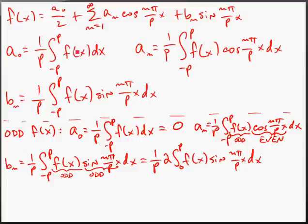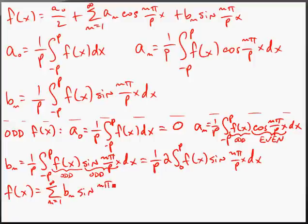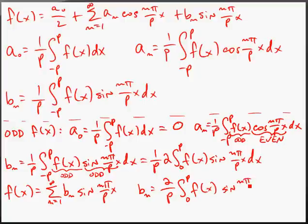You don't have to memorize these new forms — just understand the properties of odd functions and go back to the original coefficient definitions. For an odd function, f(x) reduces to the summation from n=1 to infinity of bₙ sin(nπx/P), where bₙ = (2/P) ∫₀ᴾ f(x) sin(nπx/P) dx. You solve for bₙ by knowing f(x) and P and evaluating the integral.